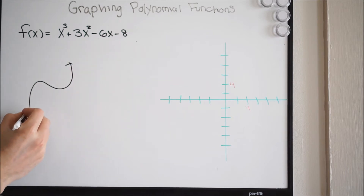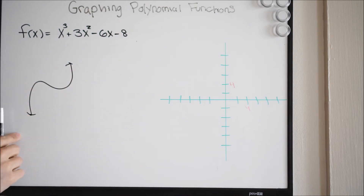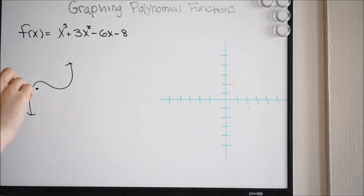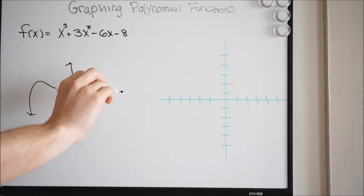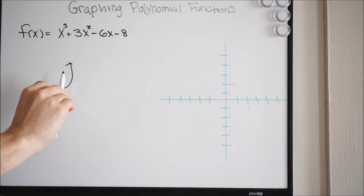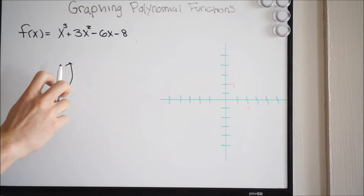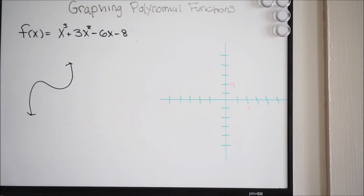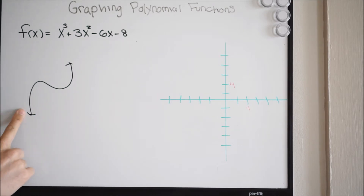So that means we can expect to have a graph with this type of behavior — whereas x approaches negative infinity, the function will be approaching negative infinity. And as x approaches positive infinity, the function will be approaching positive infinity. So we can expect this type of behavior. Let's get into the problem.